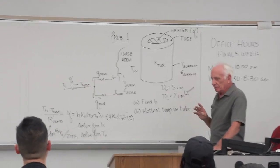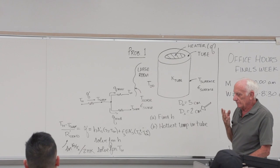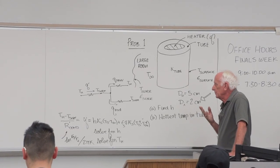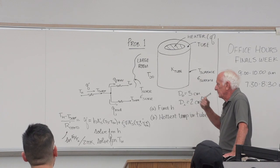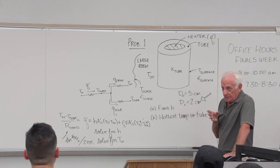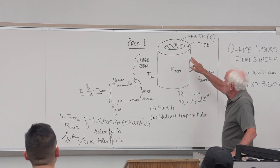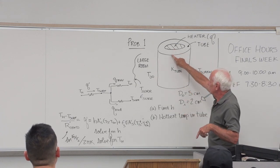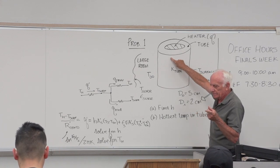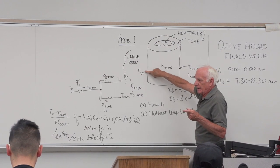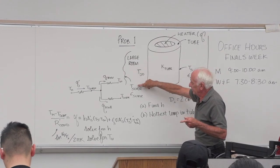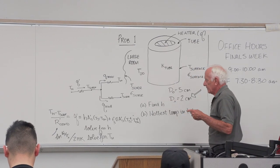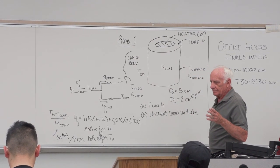So for part B, you're asked to find the temperature right there at the inner wall next to the heater. This problem involves chapter one and chapter three. Chapter three because we can look at resistances for the tube. The heat from the heater escapes radially through the tube by conduction, then goes into the room by convection and radiation to the room walls — conduction, convection, radiation: the three things in chapter one.